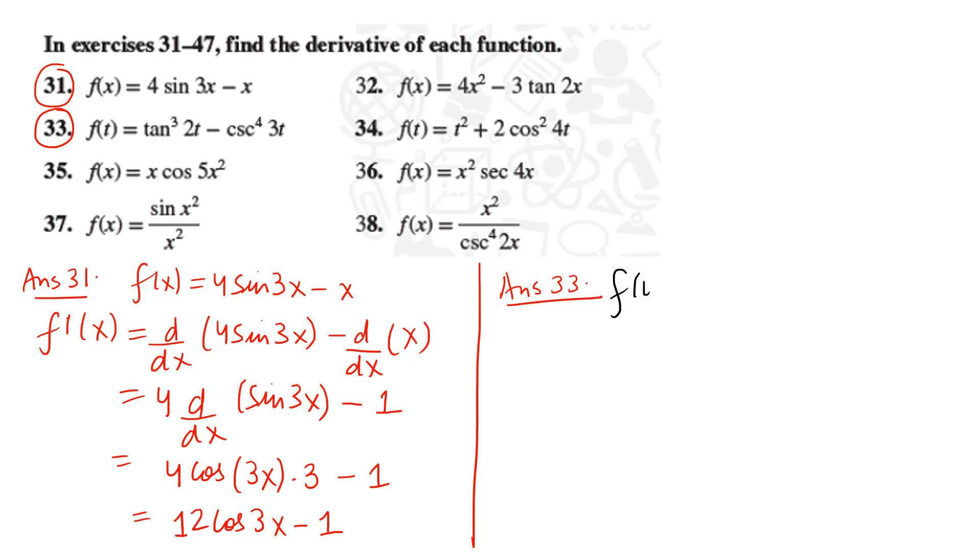Let's do 33. In 33, f of t is given—it's a function of variable t, not x. You have tan³(2t) minus cosecant⁴(3t). So we will do d by dt of tan³(2t). Distribute d by dt—oh there is a mistake, it is d by dt. We are so used to writing d by dx that we never write d by dt. Here the variable is t, so it will be d by dt.